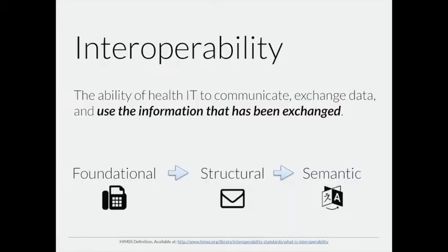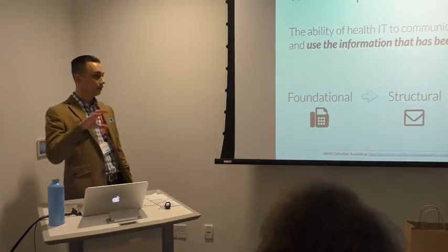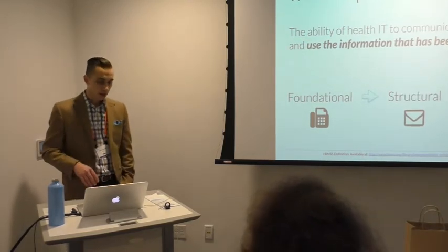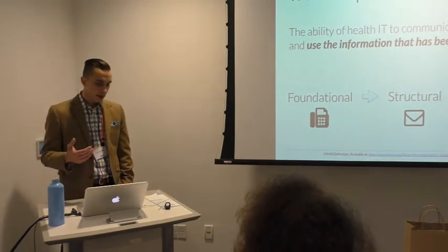In Health IT today, you've probably heard the word interoperability — it gets a lot of press. To orient ourselves, I'll use the HIMSS definition: interoperability is the capability of a health IT system to communicate, exchange data, and use the information that has been exchanged. You can think about interoperability at roughly three levels: at a basic level, you ship data from one place to another — like the fax machine model. The second level has defined conventions for how information is organized, like email fields. The highest level is semantic interoperability, where the clinical meaning of the content can be understood by both parties.